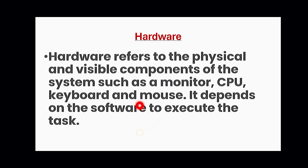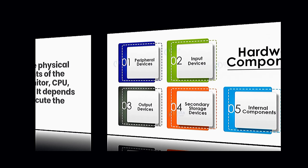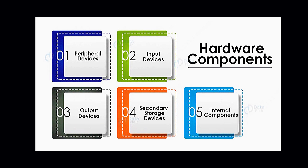Like monitor, keyboard, mouse — hardware depends on software to execute tasks. Hardware exists for the existence of software, and it depends on the hardware to process information, so hardware is mandatory. We have different hardware components such as peripheral devices, input devices, output devices, secondary storage devices, and internal components.